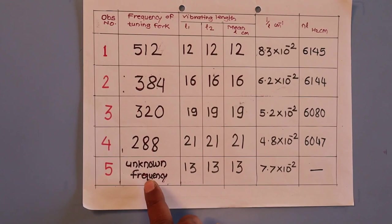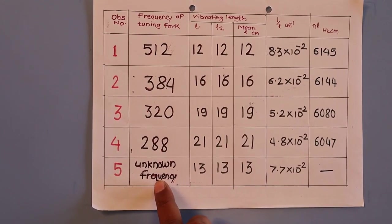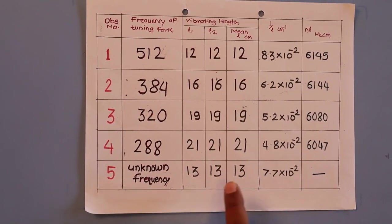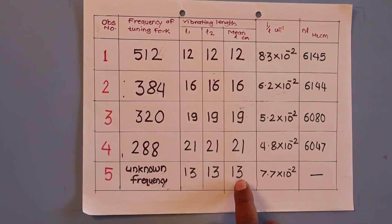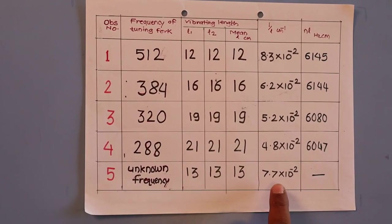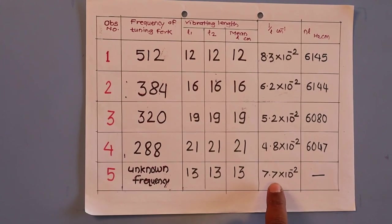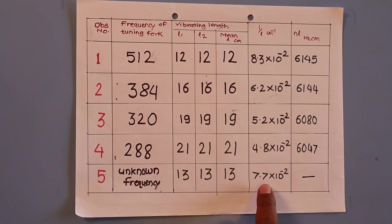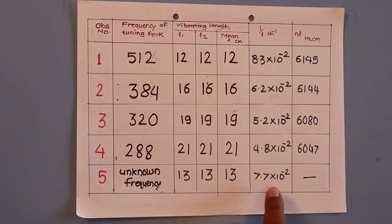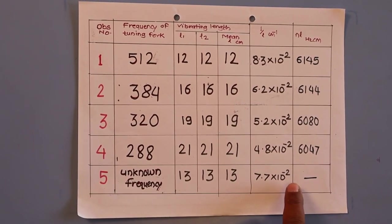For the tuning fork of unknown frequency, the vibrating length is 13 cm and its reciprocal is 7.7 × 10⁻² cm⁻¹.